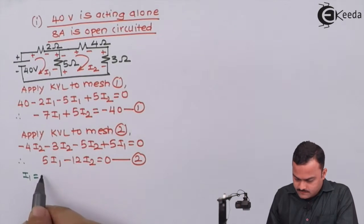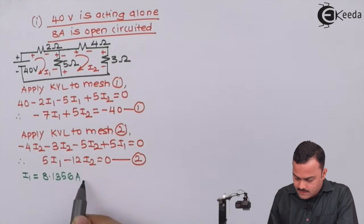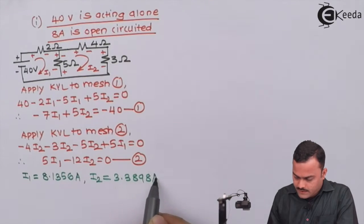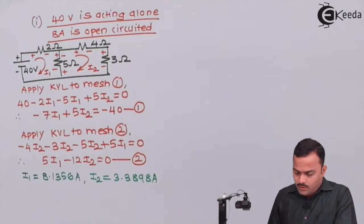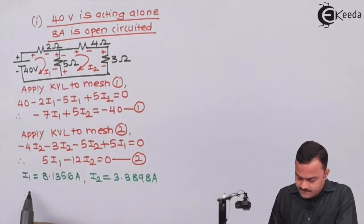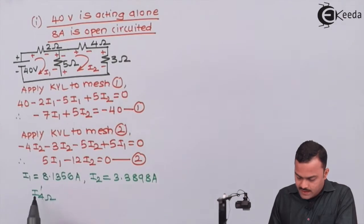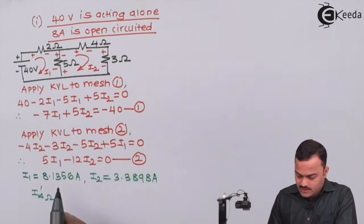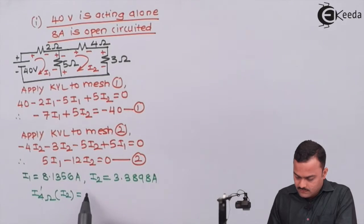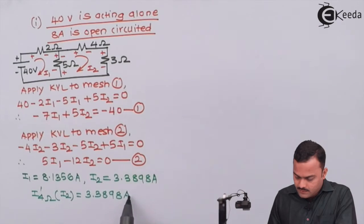Solving the two equations, we get I1 = 8.1356 amperes and I2 = 3.3898 amperes. The current through the 4 ohm resistor is I2, so I'(4Ω) = 3.3898 amperes. This is the contribution due to the 40 volt source acting alone.